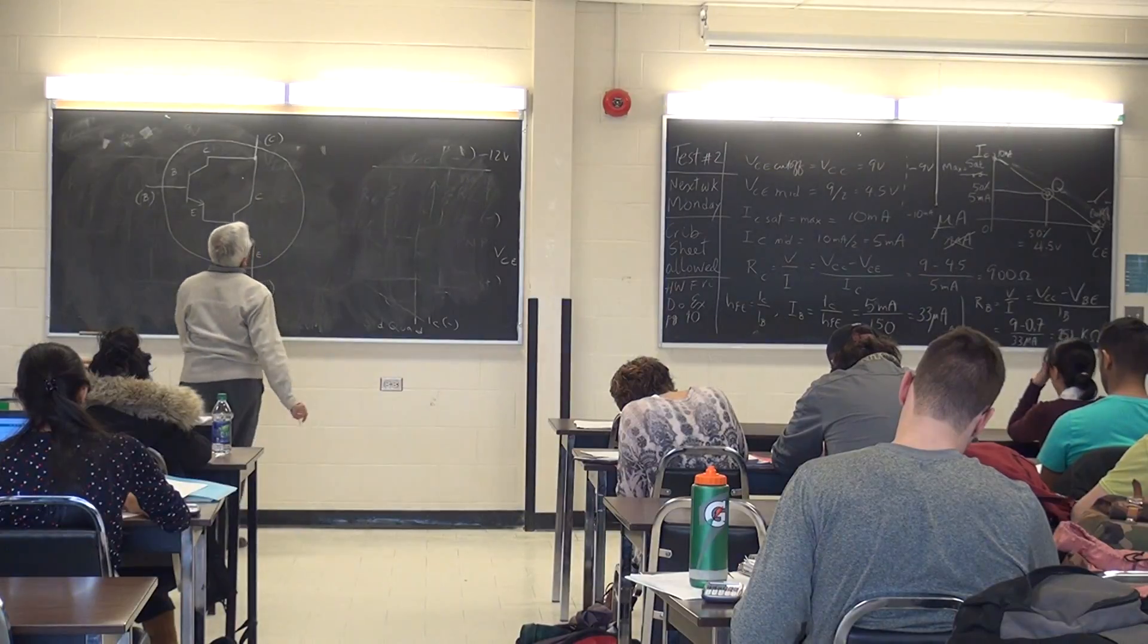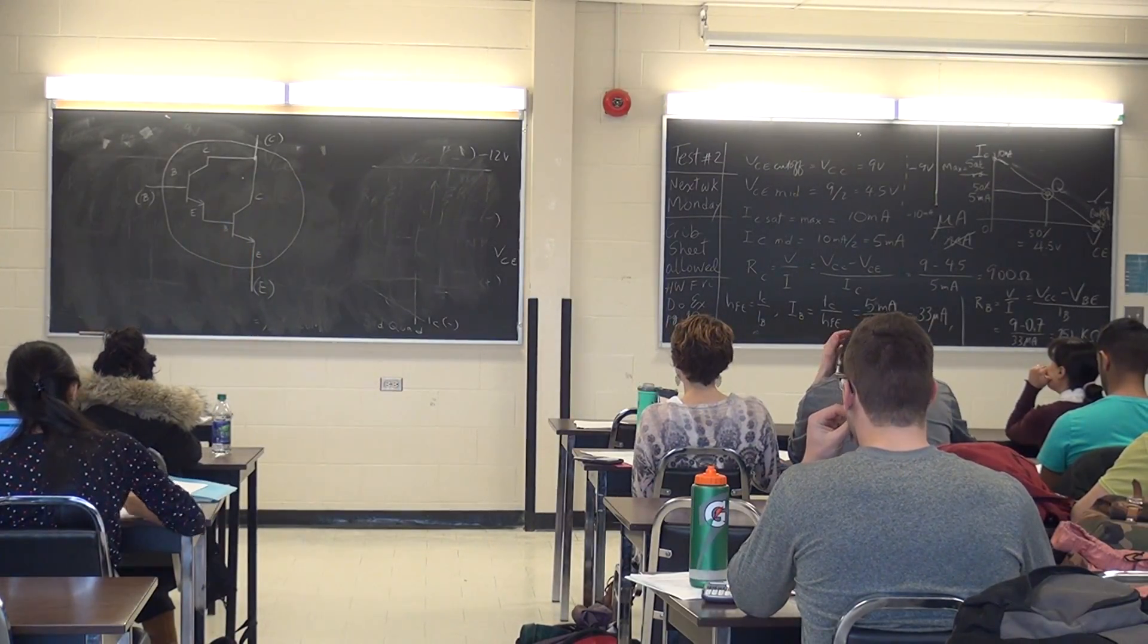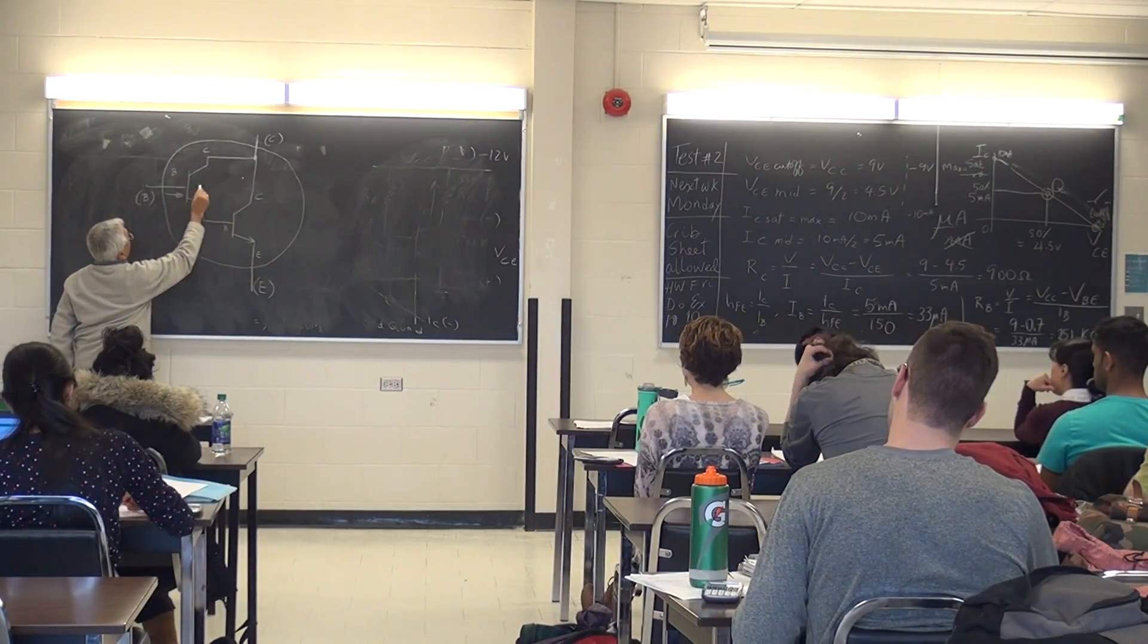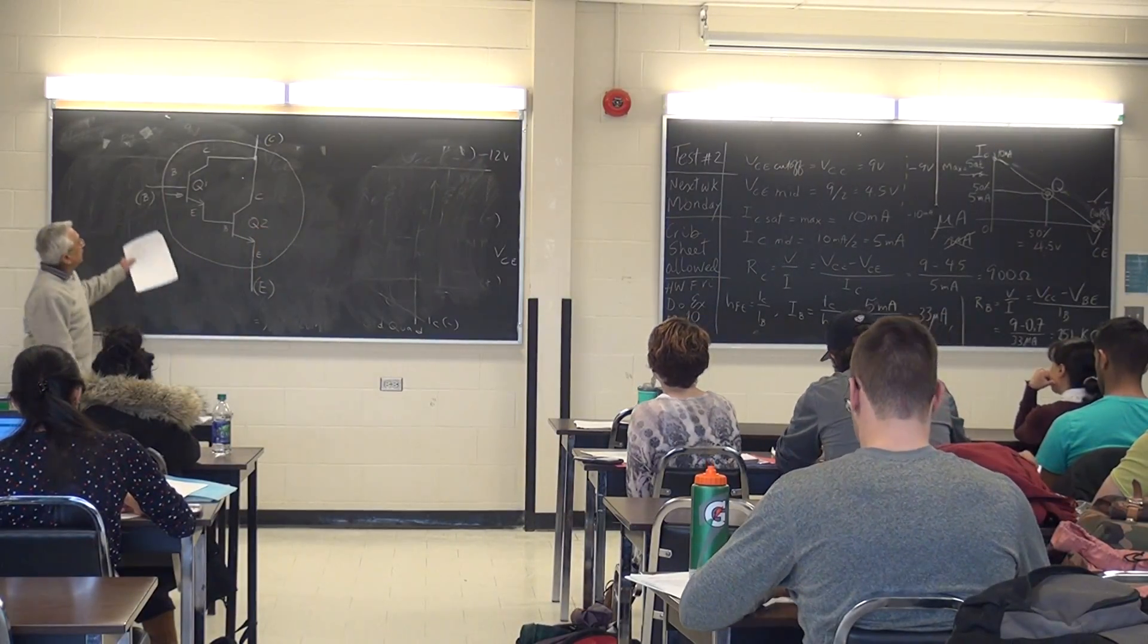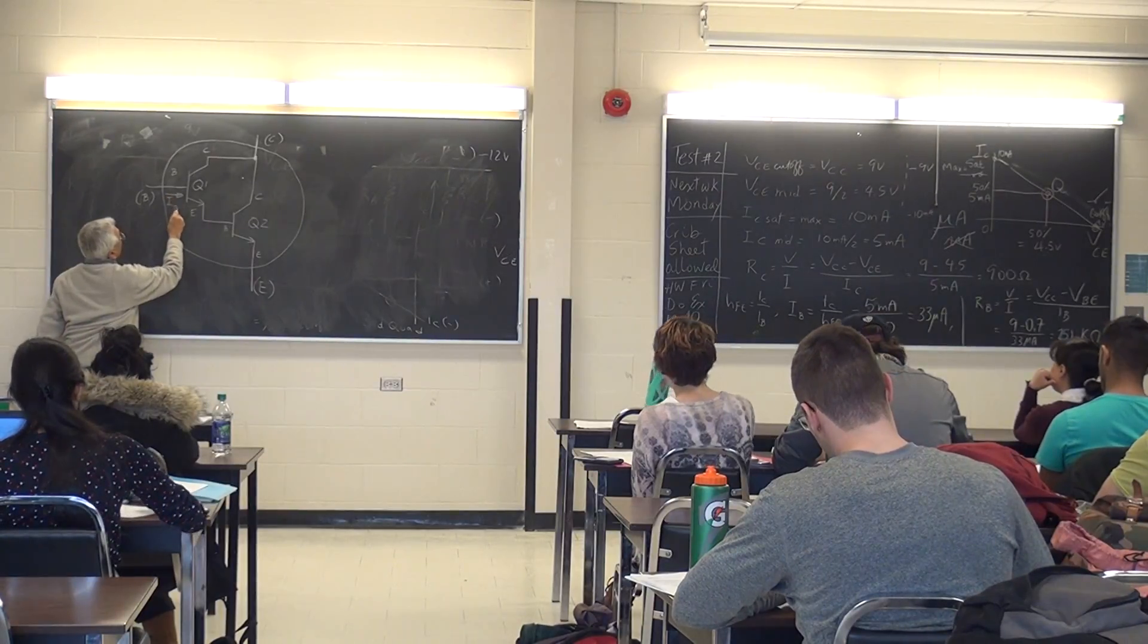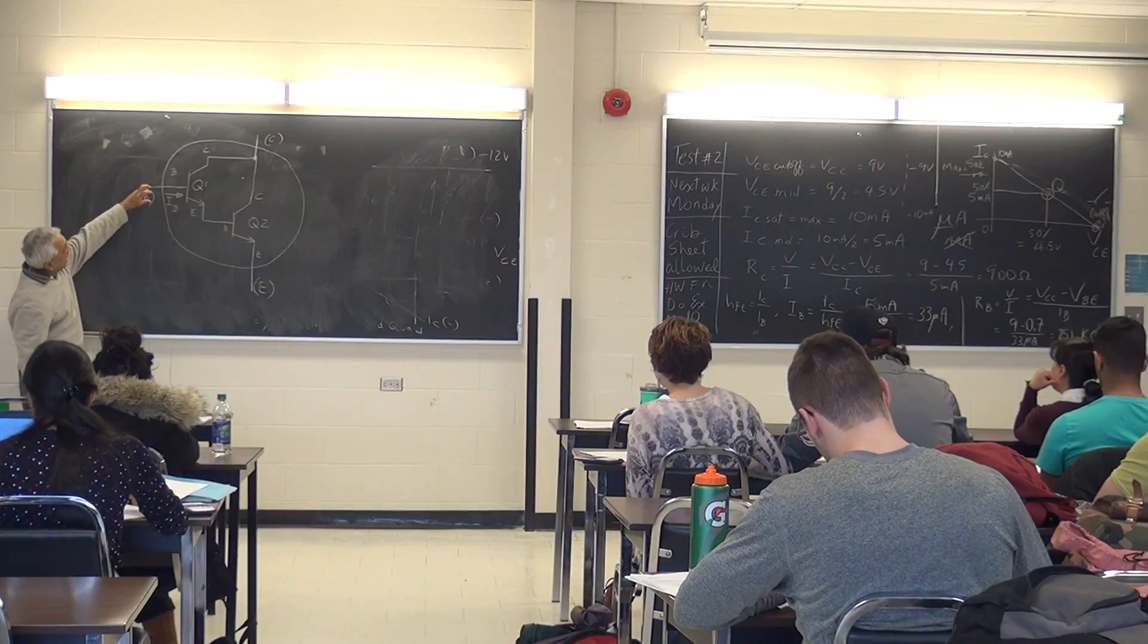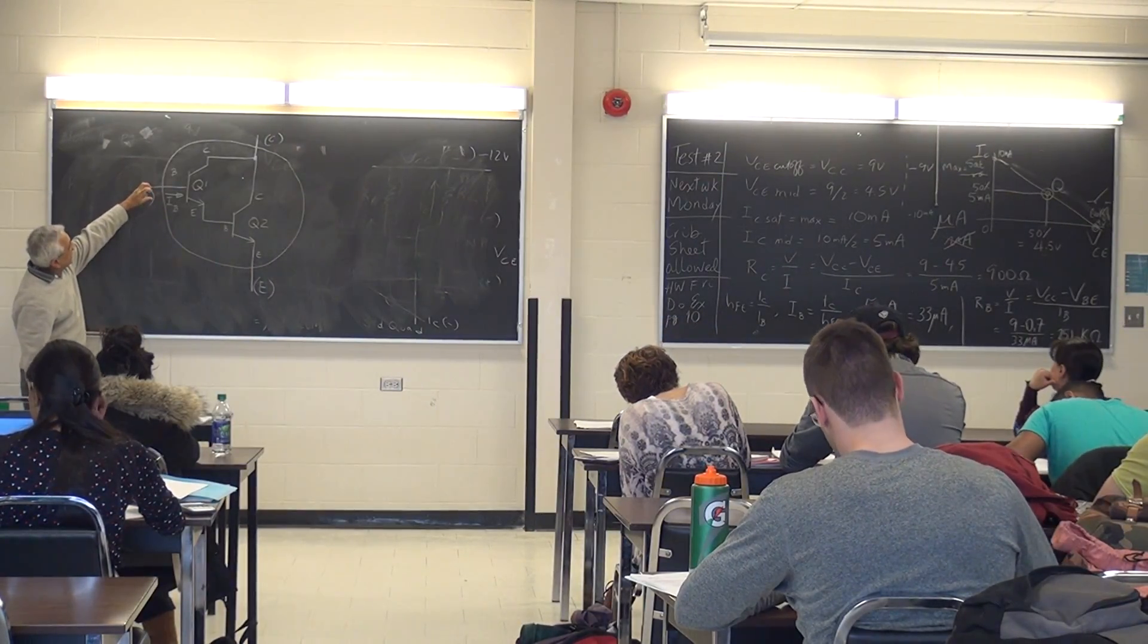And here's how a Darlington circuit works. We start off with a base current to the first transistor. We'll call this Q1, and we'll call this Q2. So we start off with IB at Q1. So that's like opening up the tap slightly, just gently. So we're going to turn on Q1 just a little bit.